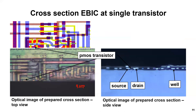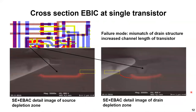The following case study shows the possibility of IBIC at a mechanically prepared cross-section. This suspicious PMOS transistor shows an increased threshold voltage and reduced output level without any leakage currents. We did the mechanical preparation in the middle of the transistor. In the optical cross-section view, we see the exposed metal lines that we can use to connect the source, the drain, and the well of the transistor. At the source structure, the IBIC image shows the expected shape, especially close to the gate structure.